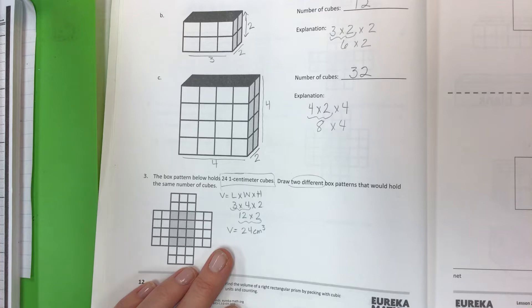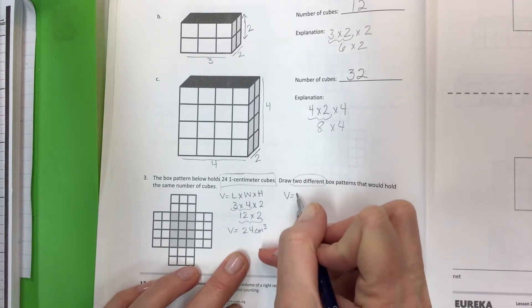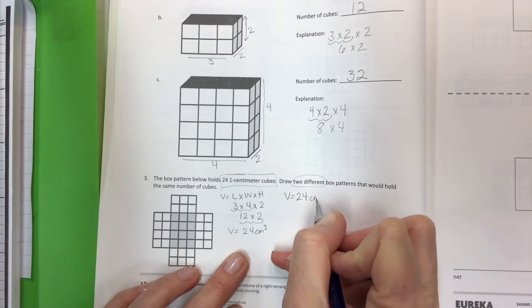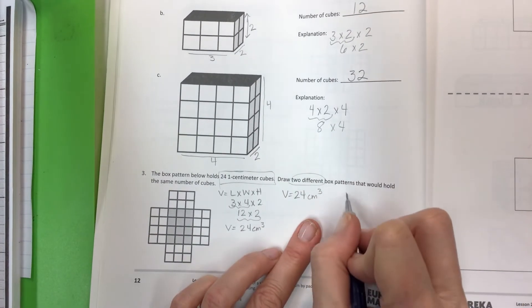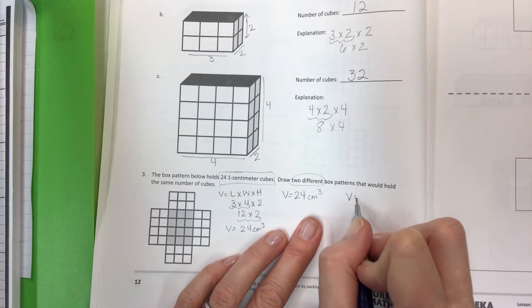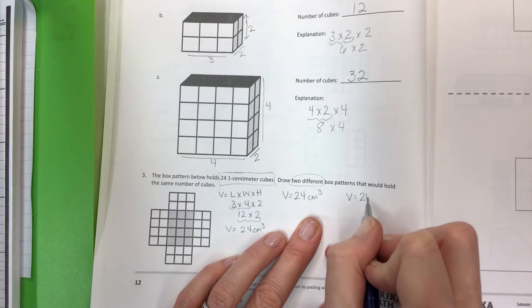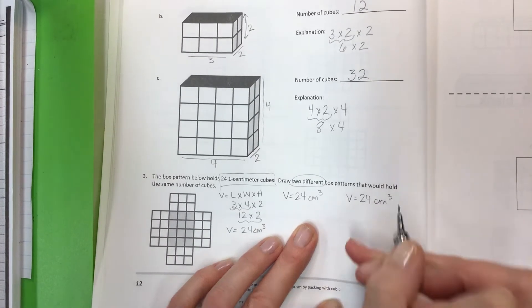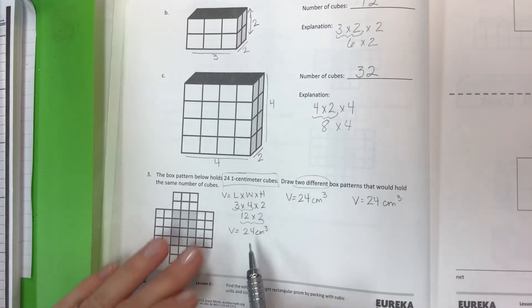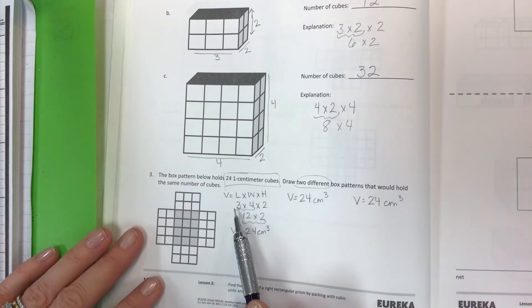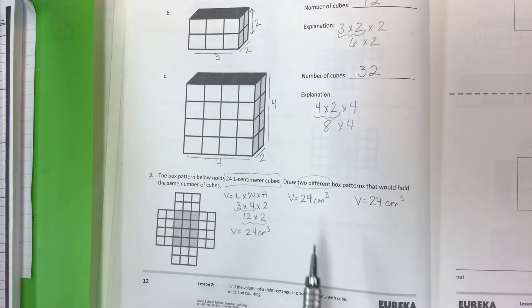Now they want you to draw two different box patterns that would hold the same number of cubes. What they're saying is the volume is 24, but how can you make 24 with other variations of numbers? You can't use 3, 4, and 2 again.